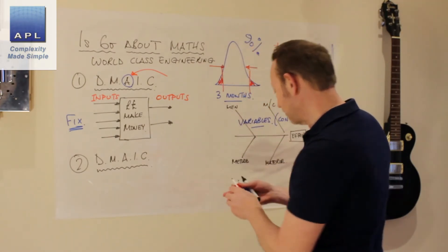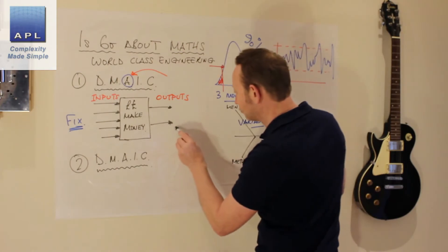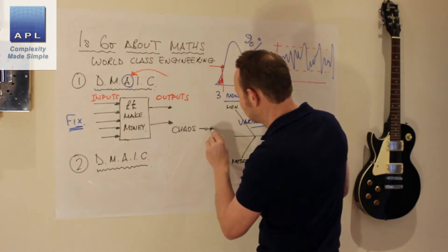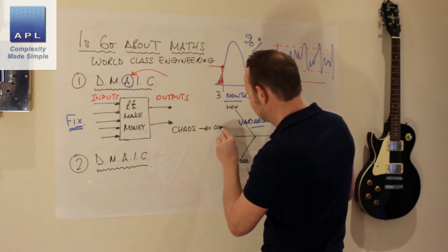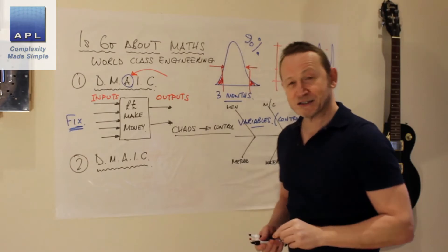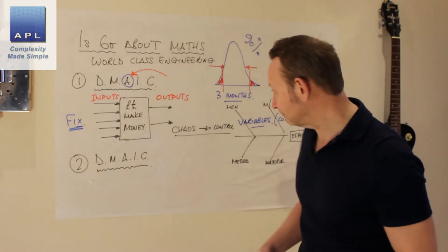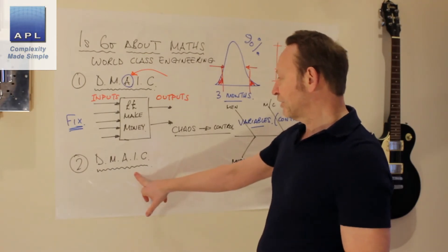It's what every engineer should be using anyway. So shouldn't be heavy lifting. Now, this is known as going from chaos to control. It takes three months and needs no mathematics at all. It needs process controls. Job done.